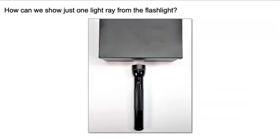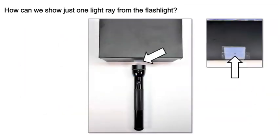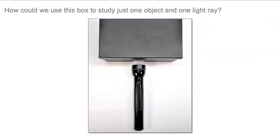I made a light ray box for us to use. This is the flashlight hole. When I place a lit flashlight behind this hole, only a small amount of light enters the box. Shining a flashlight through a pinhole is like shining a single light ray. How can we use this box to study just one object and one light ray?